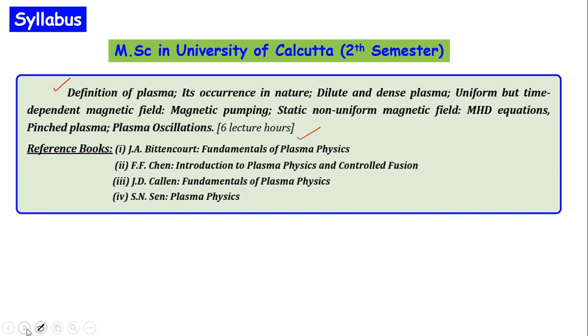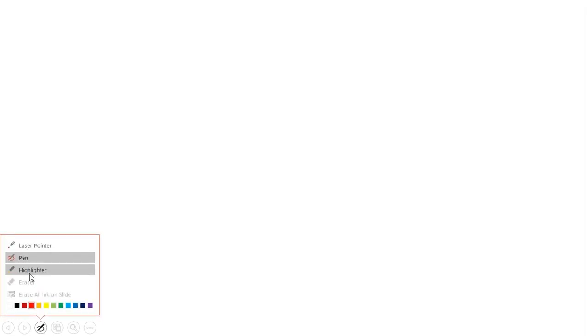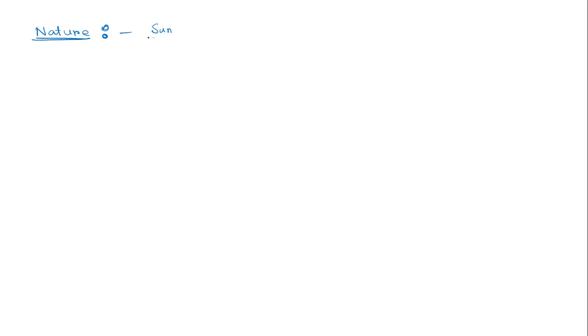In nature, plasma occurs in several examples. In the sun, at the outermost surface, there is plasma. Within lightning there is plasma. Aurora is another example of natural plasma. These are all natural plasma we can observe.